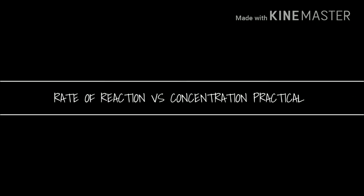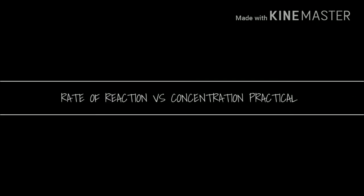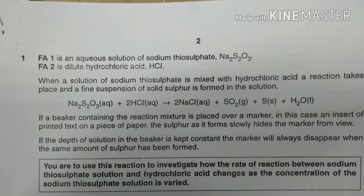Rate of Reaction vs Concentration Practical. FA1 is an aqueous solution of sodium thiosulfate, Na2S2O3. FA2 is dilute hydrochloric acid. When the solution of sodium thiosulfate is mixed with hydrochloric acid, a reaction takes place and a fine suspension of solid sulfur is formed in the solution.